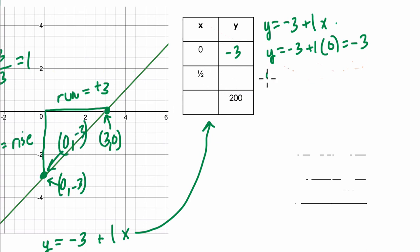What about x is 1 half? Well, y equals negative 3 plus 1 times 1 half. That's negative 3 plus 1 half, which is negative 2.5, negative 2 and 1 half. And you can see this here on the graph as well. Let me just change my tool here. Here's 1. Here's 1 half right here. Go down. You can see that the y value when x is 1 half right here is negative 2 and 1 half, which is what's happening.